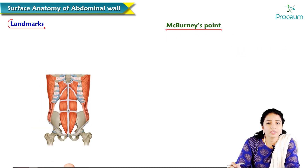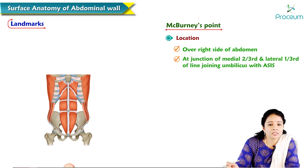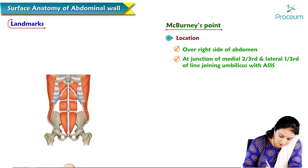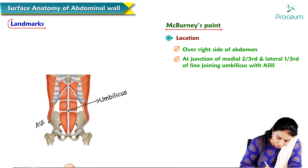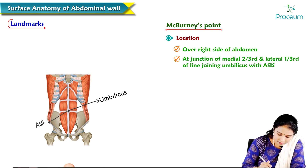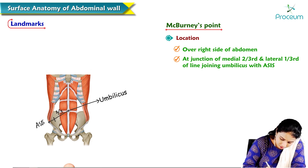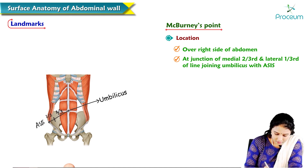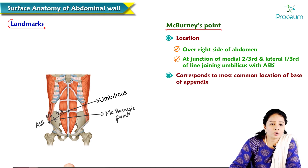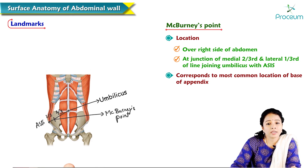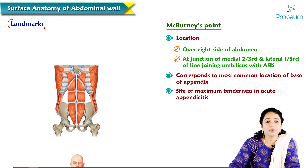The next point is McBurney's point. It lies on the right side of the abdomen at the junction of the medial two-thirds and lateral one-third of the line joining the umbilicus with the anterior superior iliac spine. This point corresponds to the most common location of the base of the appendix — where the appendix attaches to the cecum — and is the site of maximum tenderness in acute appendicitis.